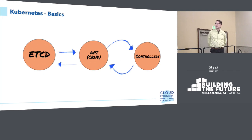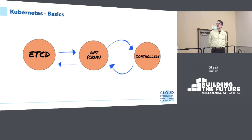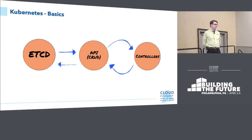Before we jump into the CF operator implementation, it's important to lay out some basic Kubernetes concepts. Kube has this concept of an API server that writes the desired state of resources into storage — in this case, ETCD. Resources or objects include things like stateful sets and deployments. Then you have controllers, which run asynchronously in the cluster and try to match the stored desired state of objects in the cluster. For example, if you have a stateful set where you define two replicas and you modify that stateful set object, the operator will try to reconcile the desired state — move from two to one pods.